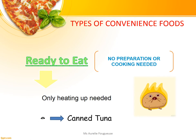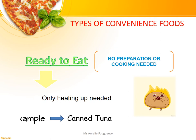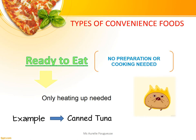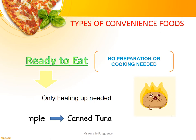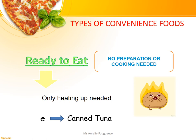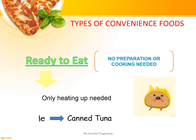Ready-to-eat foods are foods that are edible without additional preparation or cooking. That is, they are already prepared. No mixing of ingredients or other cooking is needed. Only the heating up of the food is sometimes needed. An example of ready-to-eat food is canned tuna.